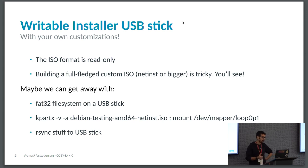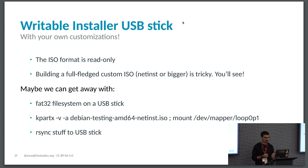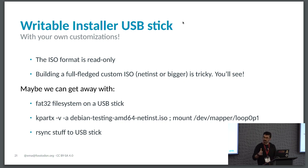Pretty soon you find you want to customize things—like setting custom kernel arguments so you don't have to type them every time, or including a preseed file. That's not easy because the ISO format is read-only. However, if you're booting an EFI system, you can create a FAT32 filesystem on a USB stick, mount the ISO locally on your machine, rsync the contents to the USB stick, and now the device is writable—you can write whatever you like.